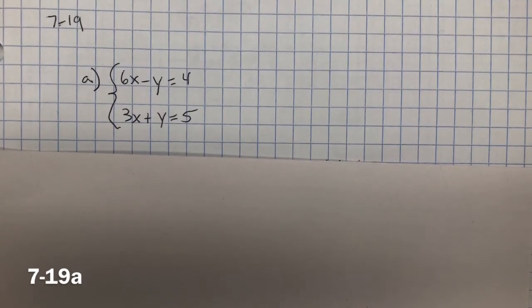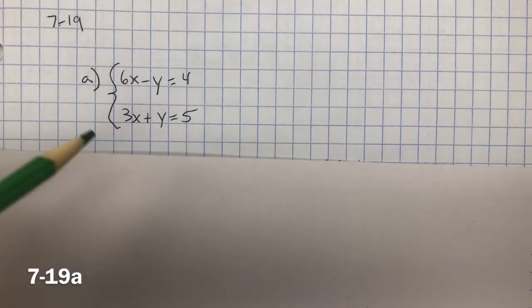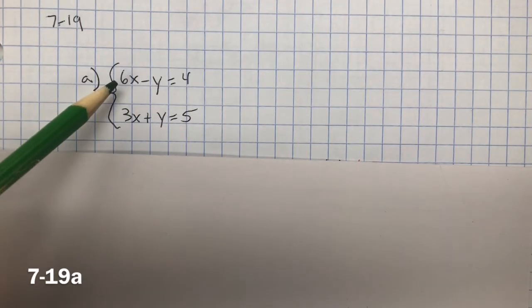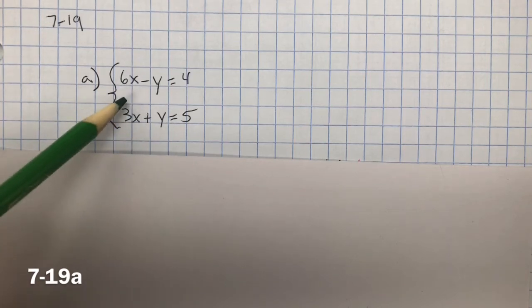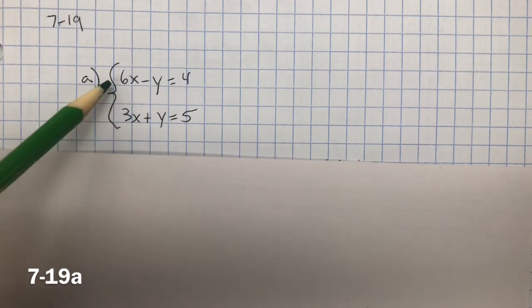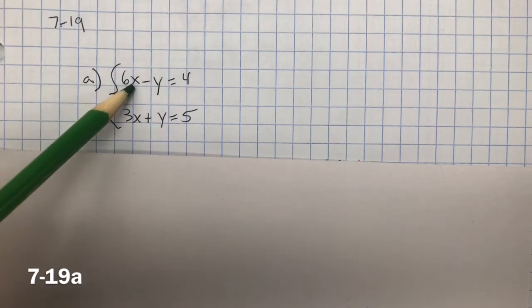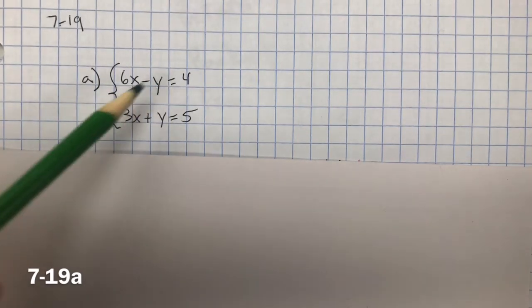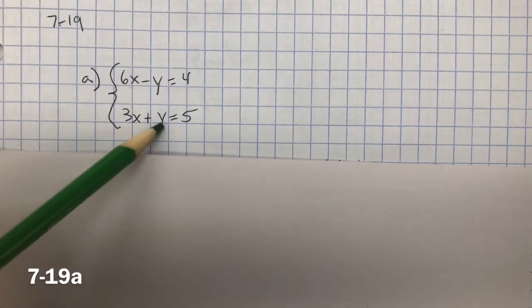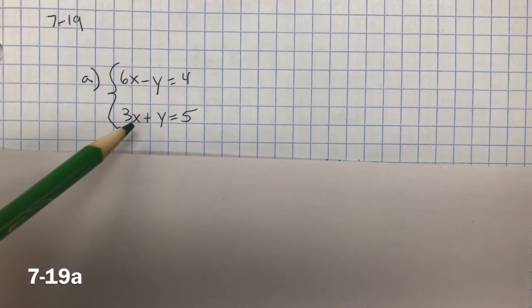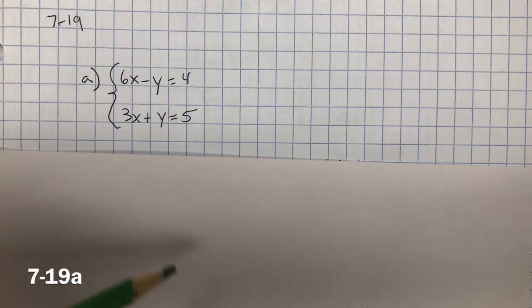But since I'm given three solutions, what I'm going to do is just do guess and check and I'll plug in one of the solutions to see if it works. I could start with 0 and negative 4. 0 for the x, negative 4 for the y, and put those into both equations. If they're both true, then that's the solution to this system.